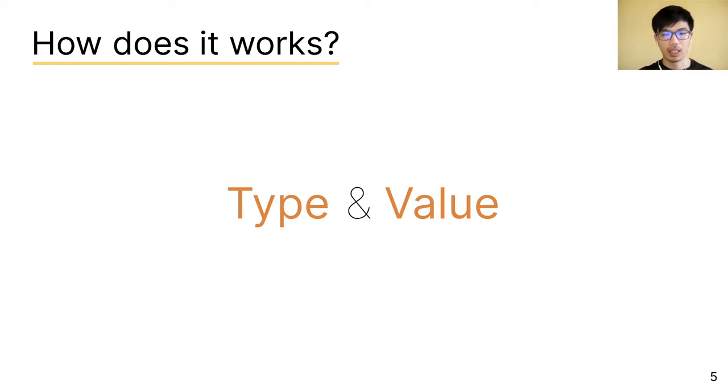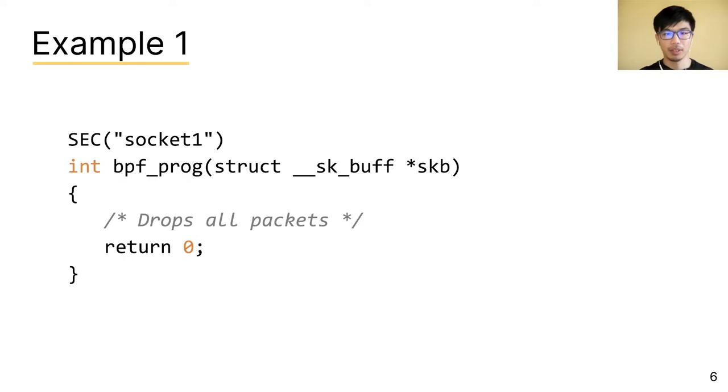Let's see an example. Here we have an eBPF program. The return value should be an integer and we return zero. And since the type of zero is indeed integer, this program will pass the verifier.